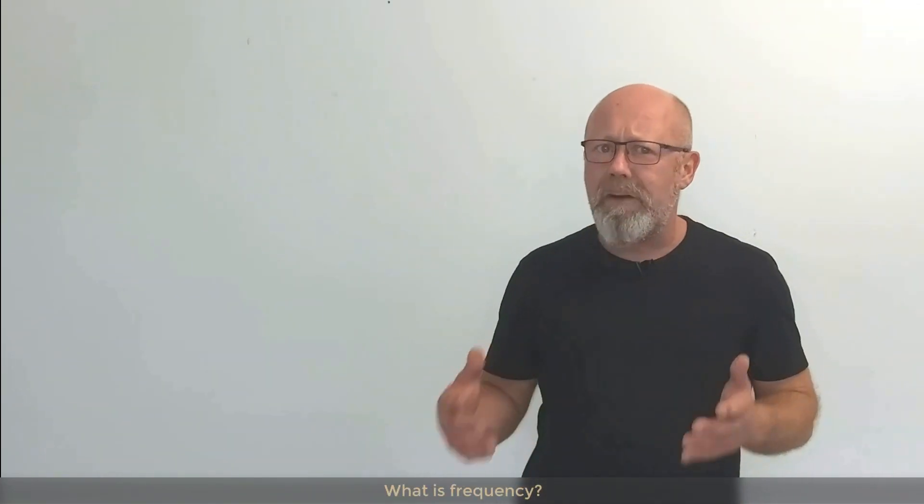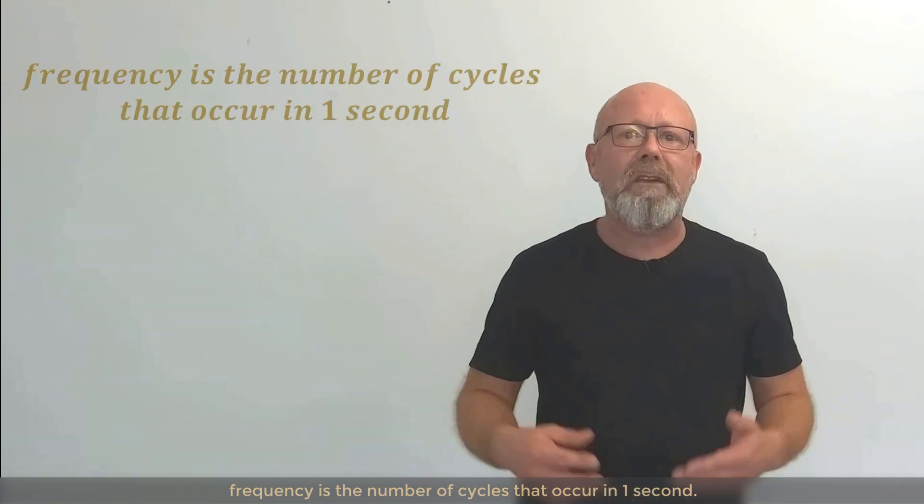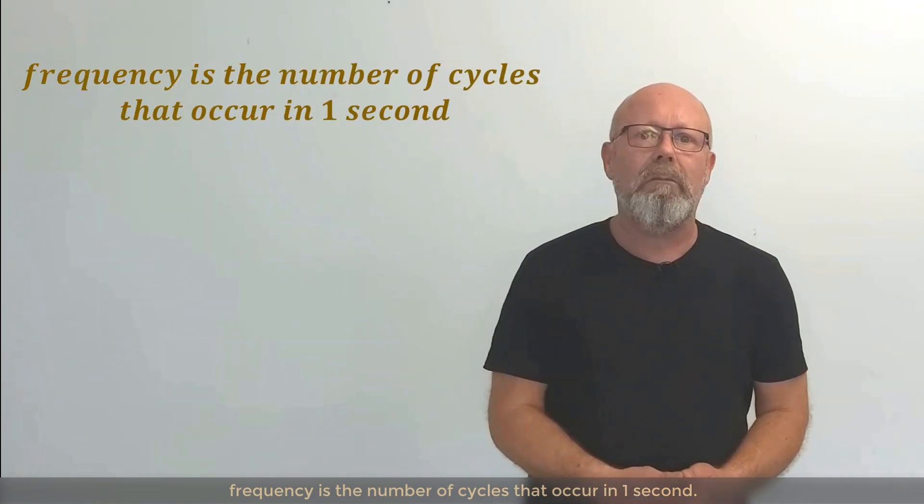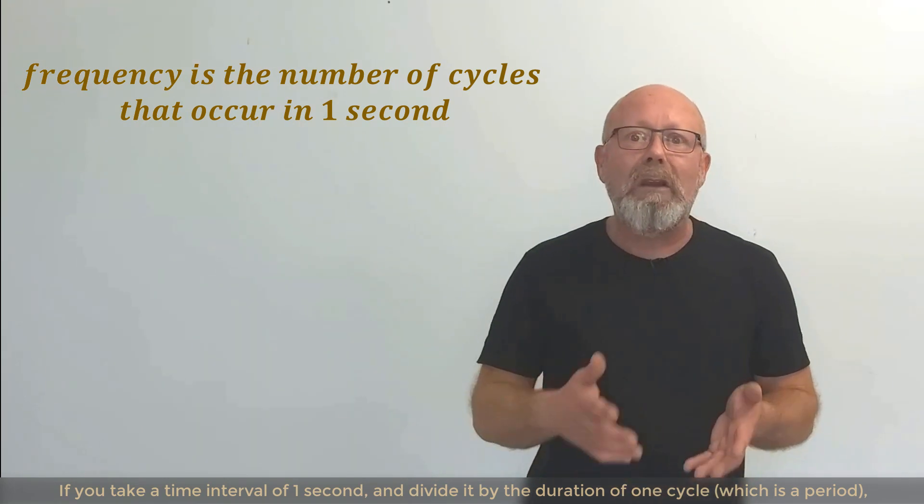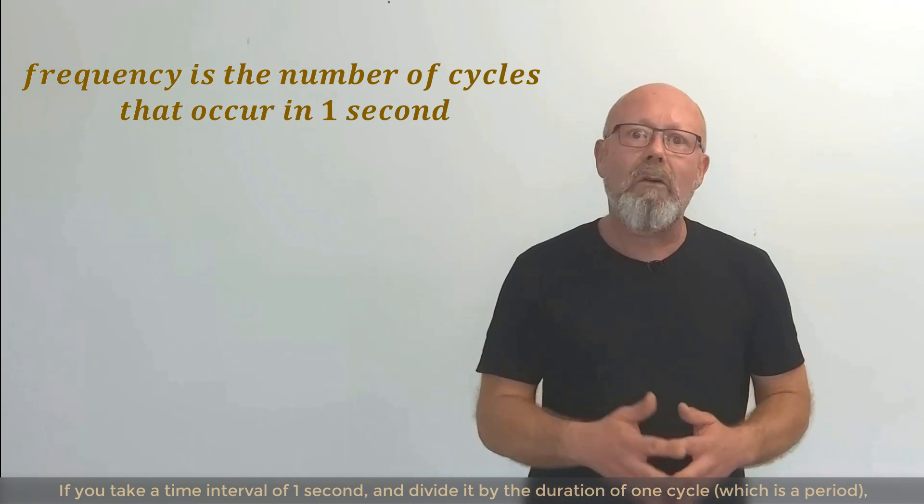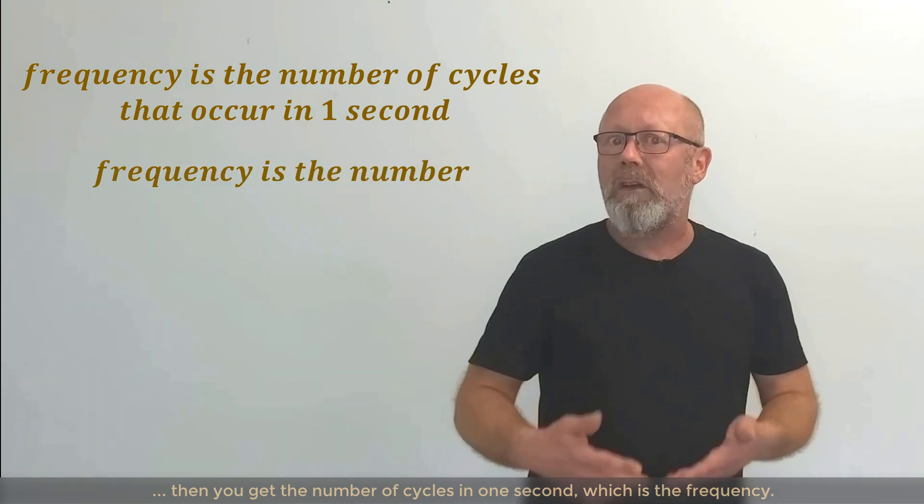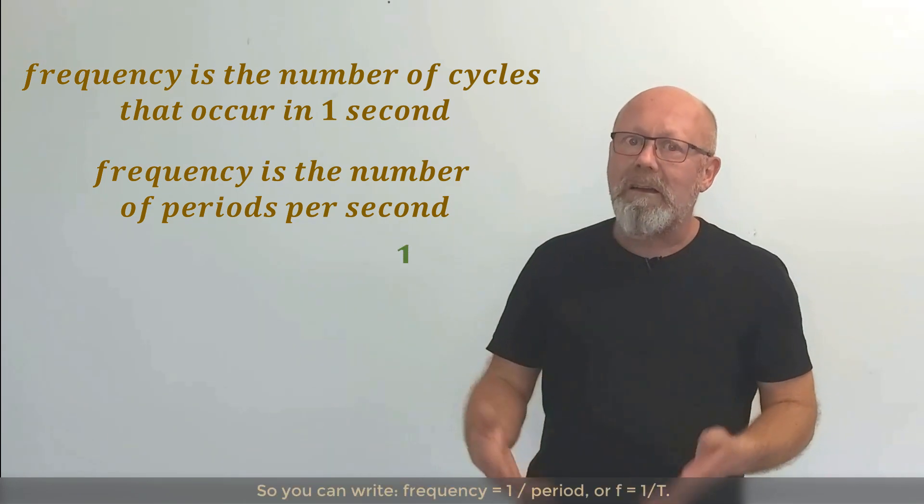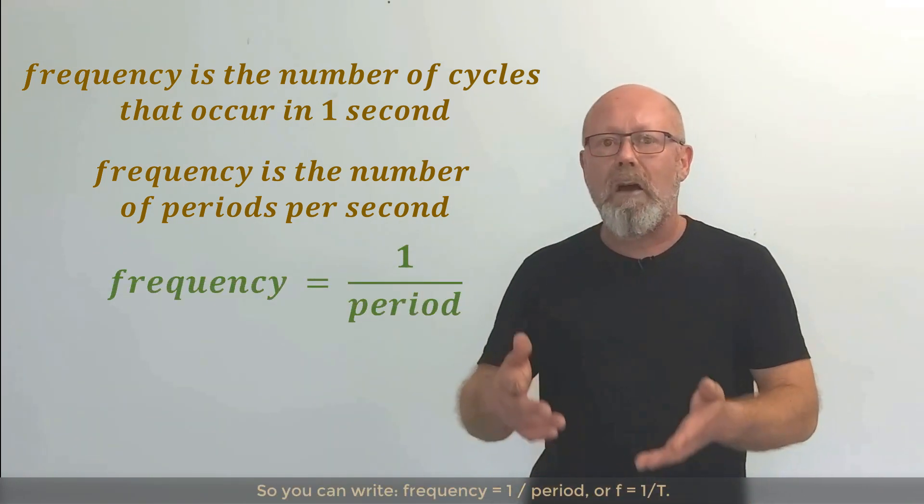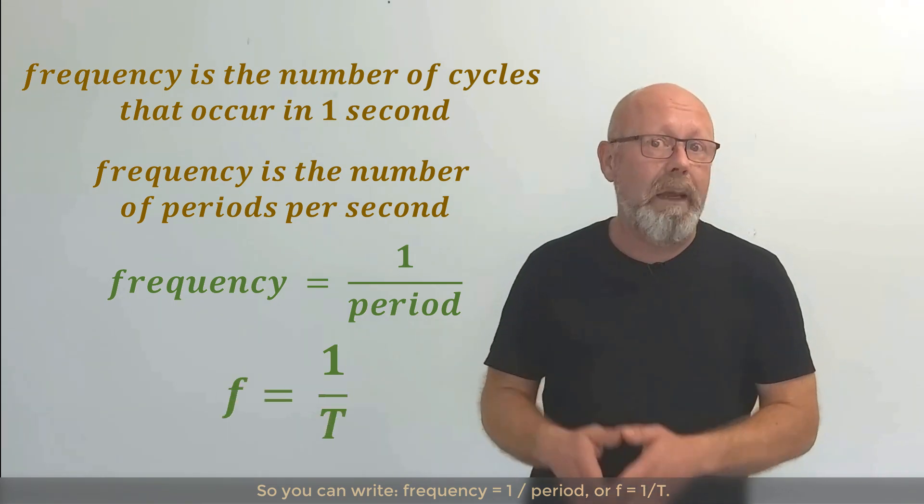Let's introduce the concept of frequency. What is frequency? Frequency is the number of cycles that occur in one second. So if you take a time interval of one second and you divide it by the duration of one cycle, which is a period, then you will get the number of cycles in one second, which is the frequency. So you can write frequency equals one over period. Or little f equals one over big T.